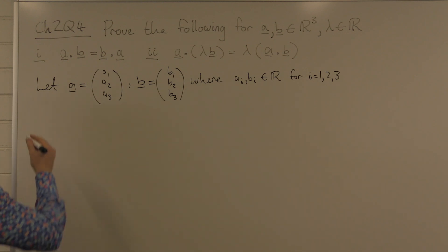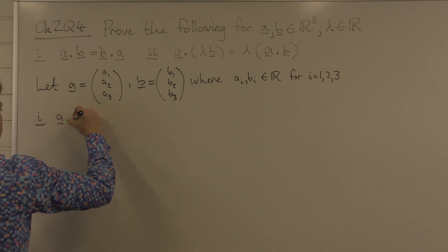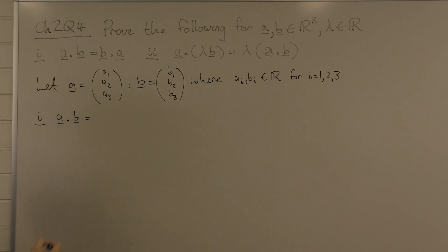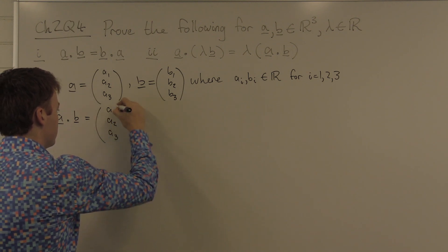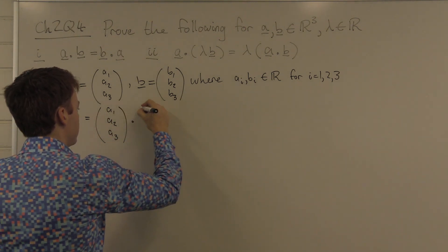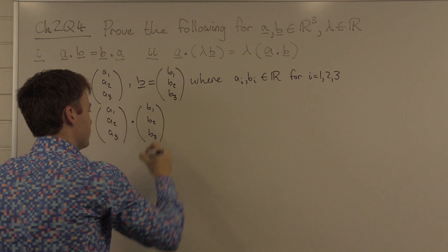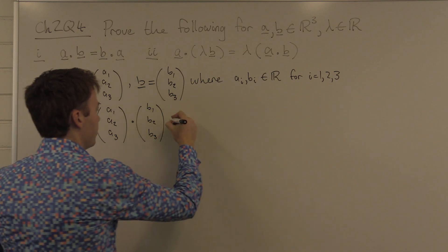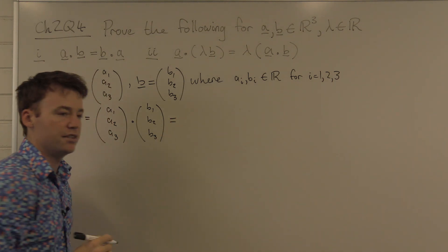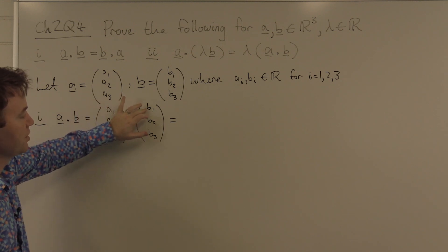Now for part one. A dotted with B. I will now take the dot product of two vectors. The dot product of two vectors is defined like this: you take the first element of this vector times the first element of this vector.